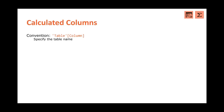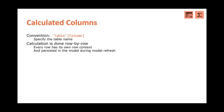I want to start with calculated columns because they're the easiest to understand — they perform like a calculation in Excel, where the same formula is copied down all rows. When referring to calculated columns, we should always state the table name followed by the column name. For measures, we'll omit the table name, as we'll see shortly, because it's important to distinguish whether something is a column or a measure. For columns, we always write the table name — it's not a syntactical requirement, but it makes it easier to understand what's happening in the calculation.